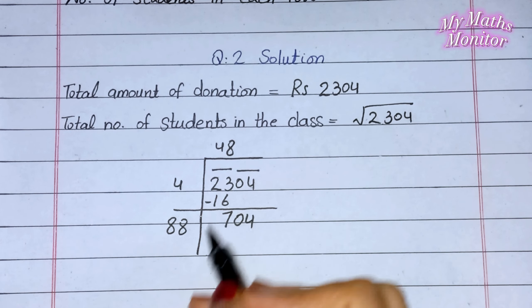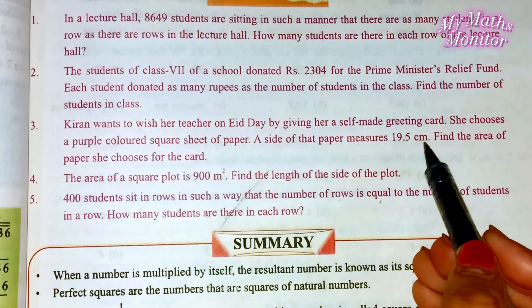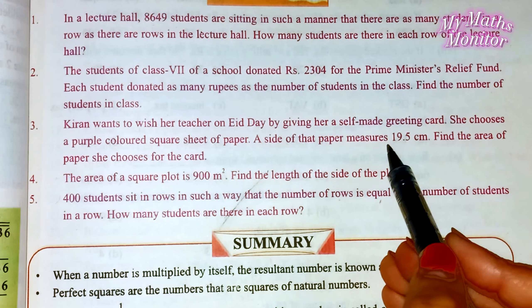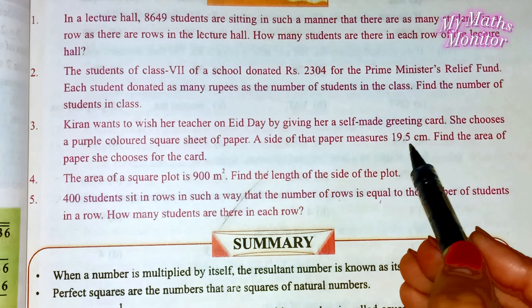Question number 3: Kiran wants to wish her teacher on Eid day by giving her a self-made greeting card۔ Kiran اپنی استانی کو عید کے دن اپنے ہاتھ سے بنائے ہوئے greeting card کے ذریعے مبارکباد دینا چاہتی ہے۔ She chooses a purple color square sheet of paper — اس نے جامنی رنگ کا مربع کاغذ منتخب کیا ہے۔ A side of that paper measures 19.5 cm — اس card کے ایک کنارے کی لمبائی ہے 19.5 cm۔ Find the area of paper she chooses for the card.